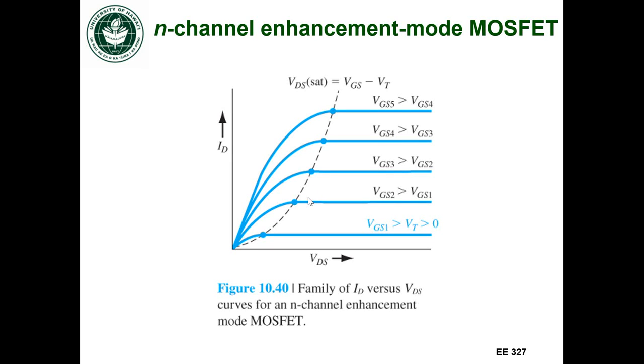In the previous video when we were looking at drain currents versus VDS, we were only looking at that curve for one gate to source voltage. But you can also be changing gate to source voltage, and in this case you're going to draw a family of curves that correspond to the drain current versus the drain to source voltage but for different gate to source voltages.